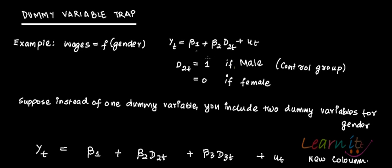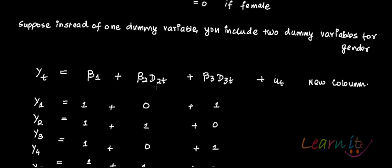But supposedly, instead of just one category — male and female is a gender category, gender is a dummy variable — under this there are two categories: one is male, another is female. So for one category you have one dummy variable. But supposedly, for both the categories you would have a dummy variable: d2 for males and d3 for female.